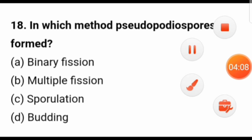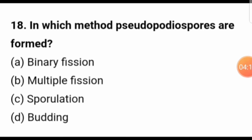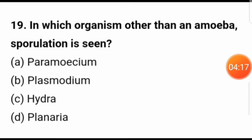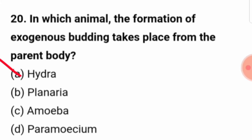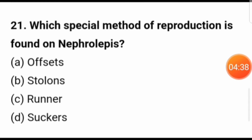In which method are pseudo-podiospores formed? Pseudo-podiospores are formed during sporulation. In which organism, other than amoeba, is sporulation seen? Sporulation is seen in plasmodium. In which animal does exogenous budding take place from the parent body? The answer is hydra. Which special method of reproduction is found in nephrolepis? Nephrolepis, also called Boston fern, reproduces through stolons.